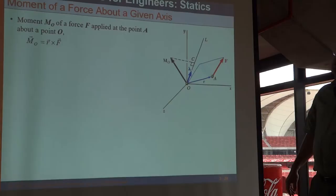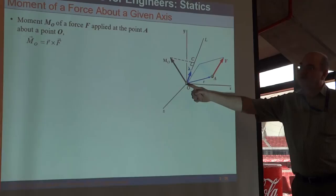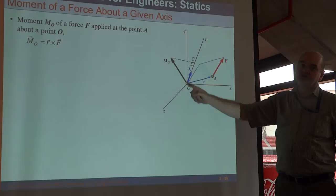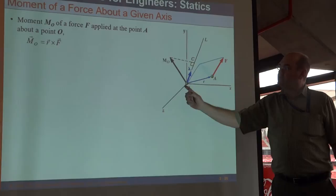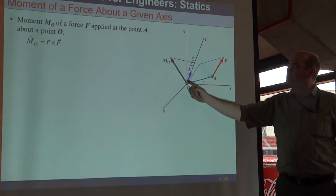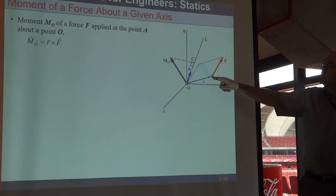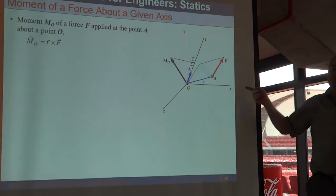Moment of force about a given axis. We've spoken about moments of force around a given point - we are quite familiar with that. There's a force F - we'd like to know what is the moment around the point O. Now if we'd like to know what the moment is around a given axis, all we do is dot product that moment around point O with a unit vector in whatever direction I want. If I want to know the component of MO in the x-direction, I dot product that with i-hat. Or with j-hat, or in the direction lambda - whatever. When they ask you what is the moment of this vector around the x-axis, all you take is the moment around the origin and find the component of the moment in the x-direction. As simple as that.